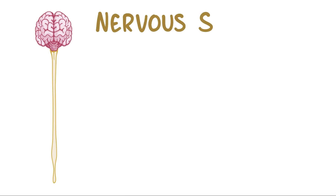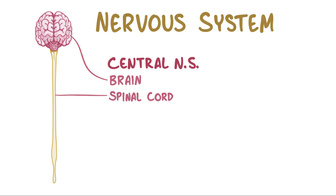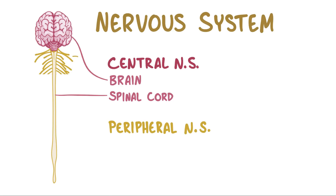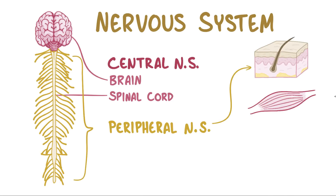Broadly speaking, the nervous system consists of two parts. The central nervous system consists of the brain and the spinal cord, so the peripheral nervous system includes the nerves that fan out from the central nervous system to reach the skin, muscles, and organs.